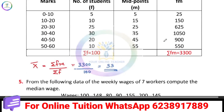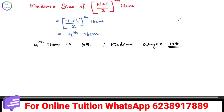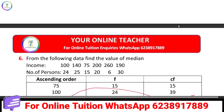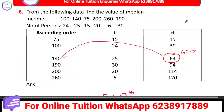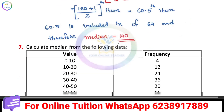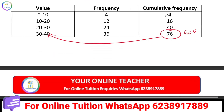Arithmetic mean, then median — individual series, discrete series, and continuous series.